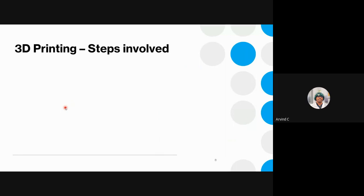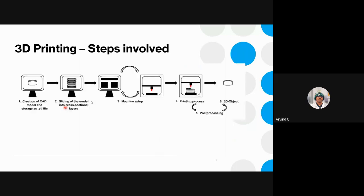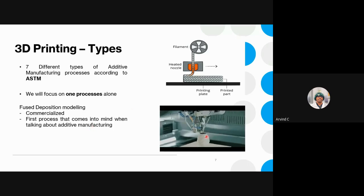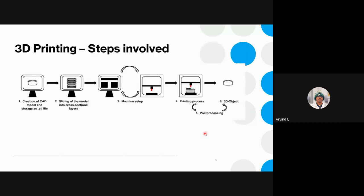The steps involved in 3D printing: first, since this is a computerized process, you need a design of the 3D model. You import that design into specific software that divides the 3D design into small 2D slices — this is exactly how 3D printing works, stacking up 2D objects like circles to get a cylinder shape. The software does the slicing for you.